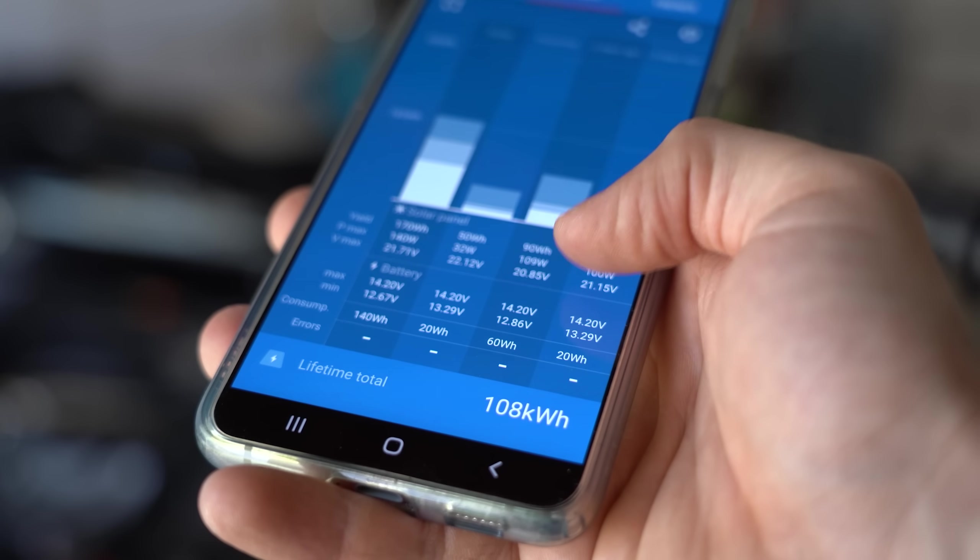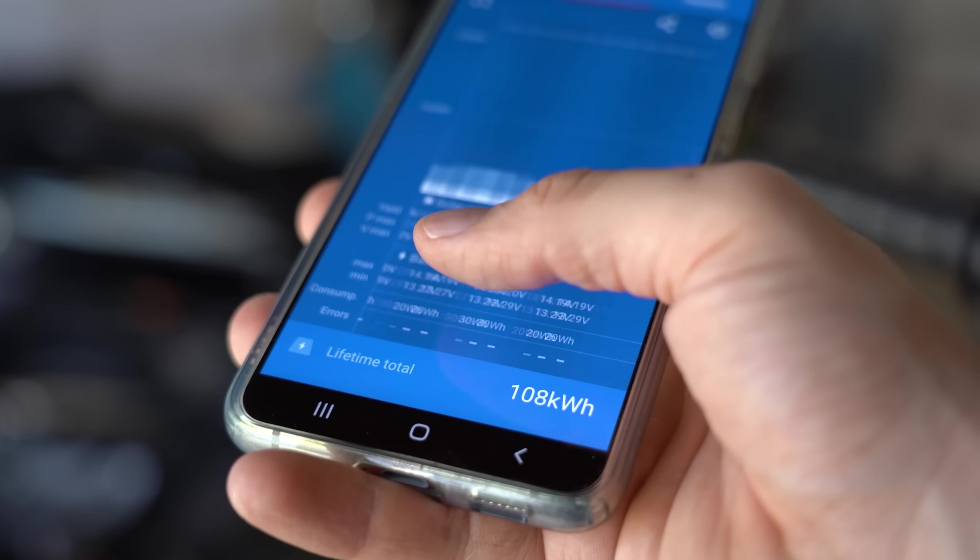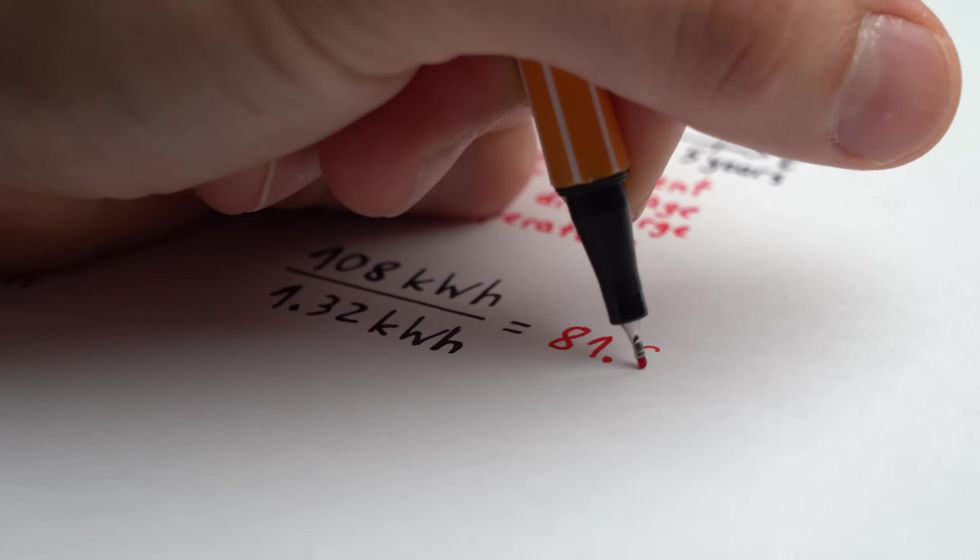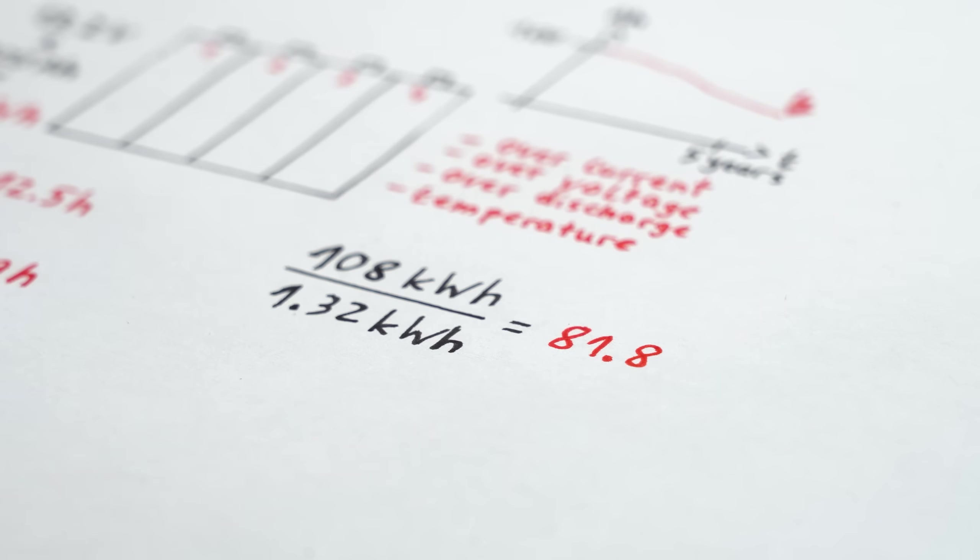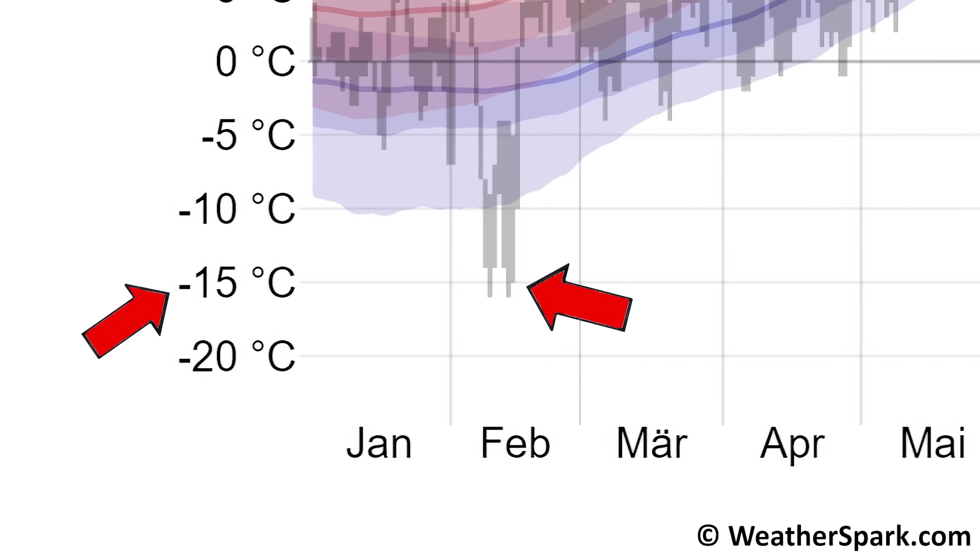In my case though I only stored 108kWh of energy inside the battery pack so far which would theoretically equal around 82 cycles. So that should not be the problem but like I said there were some low temperatures.